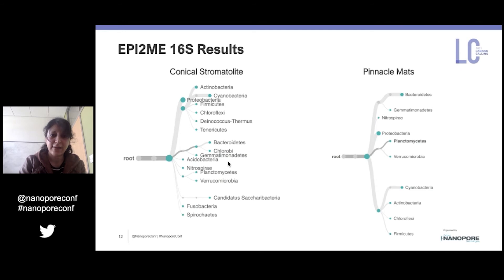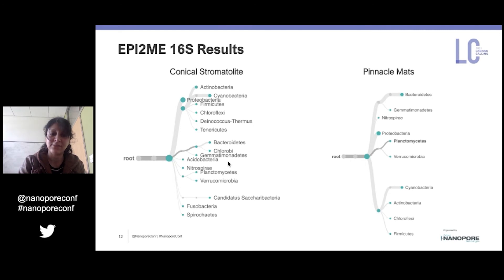Currently, I've started testing the hypothesis that community structure and function are responsible for the morphology by looking at the community differences between the conical mats and the pinnacle mats. Here, you can see the trees generated using the EPI2ME 16S workflow. From these trees, we can see that there is more diversity in the phyla in the conical stromatolites than the pinnacle mats. To reiterate, the hypothesis is that the different communities lead to different structures. To test this, I need to be able to look at abundances of each of these phyla in addition to the diversity of the community.